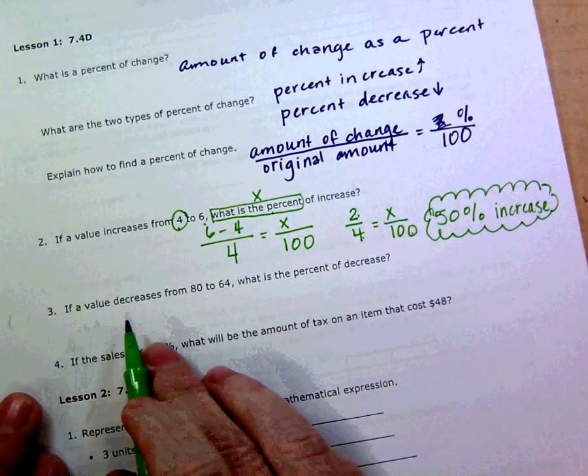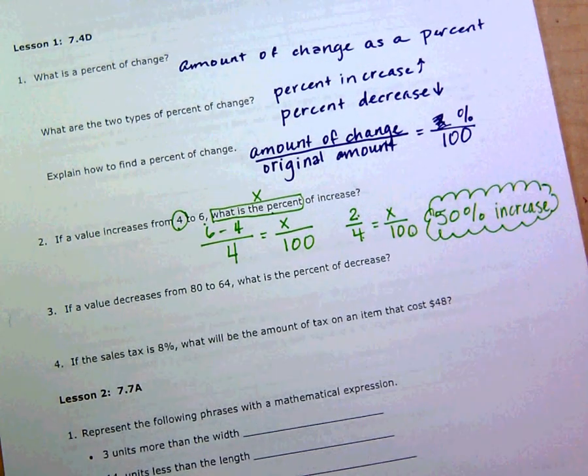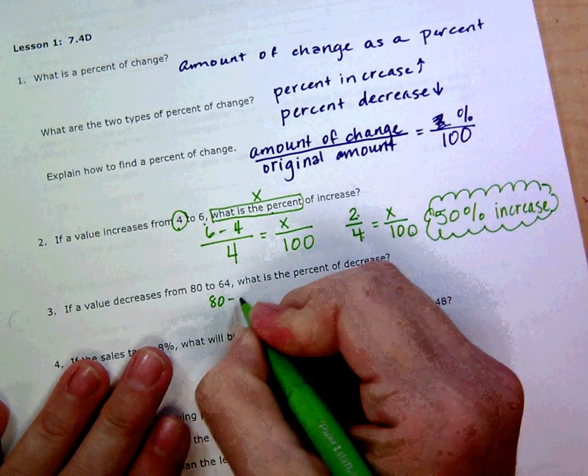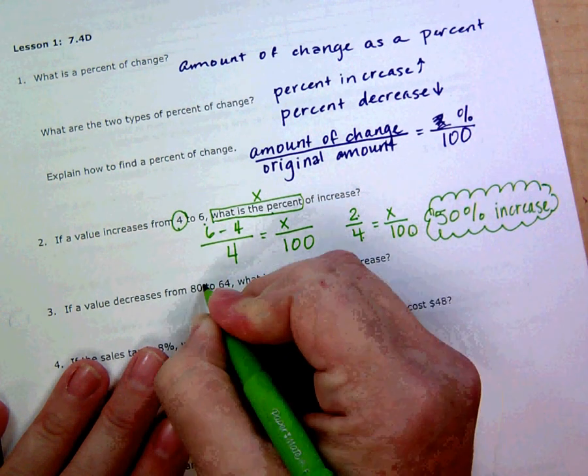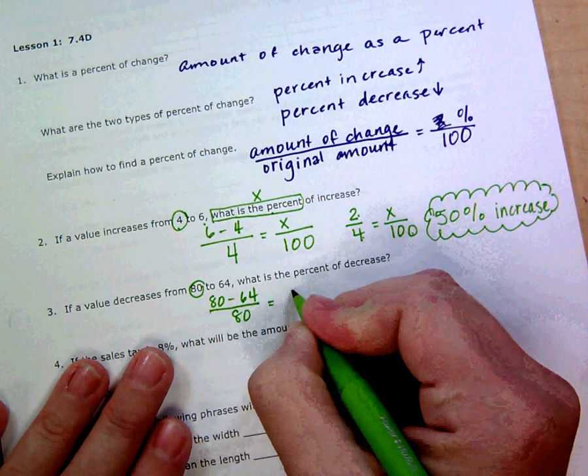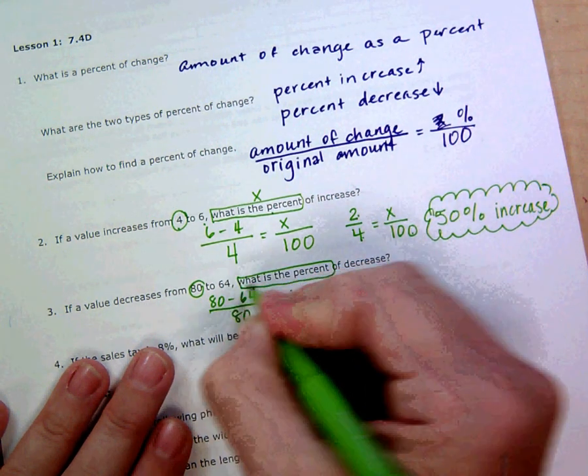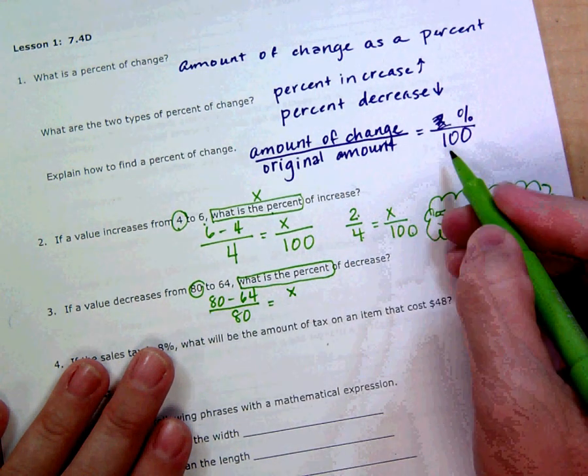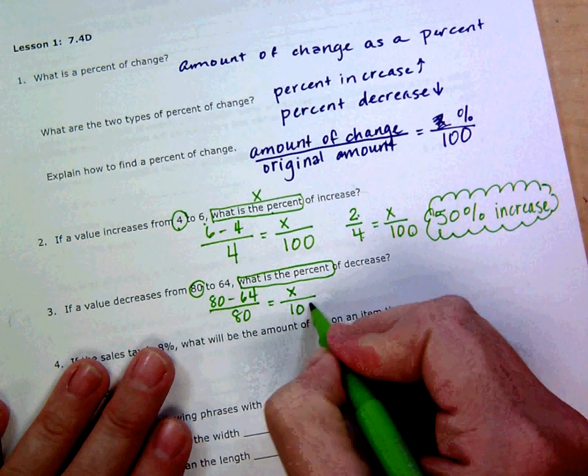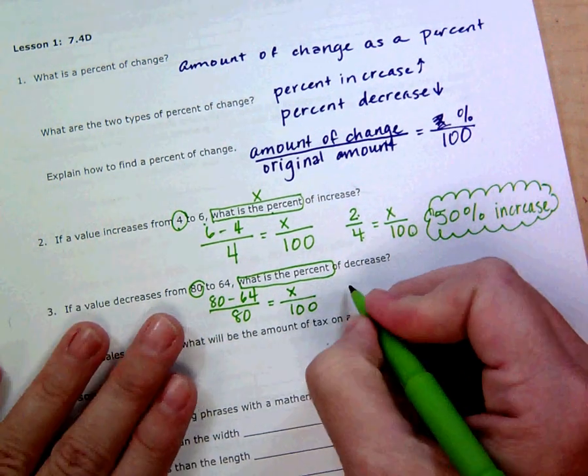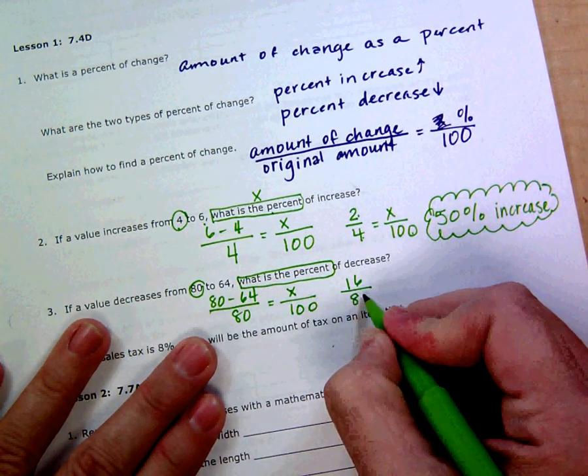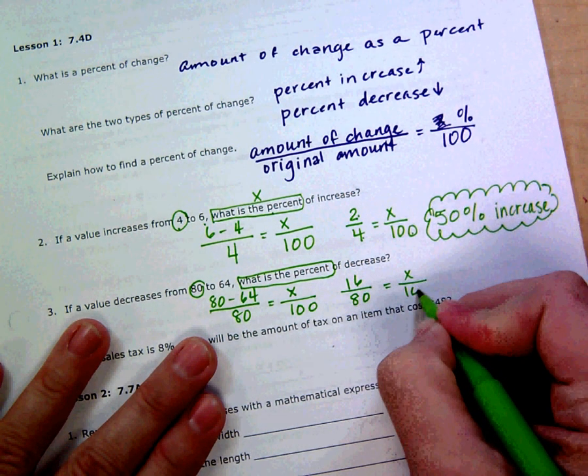If a value decreases from 80 to 64, what is the percent of decrease? We find the difference, same as before. The original amount is that 80 and that equals to what is the percent, so our x goes up here. We're just filling in these pieces each time over 100. Now we've got 16, because 80 minus 64 is 16, over 80 equals x over 100.